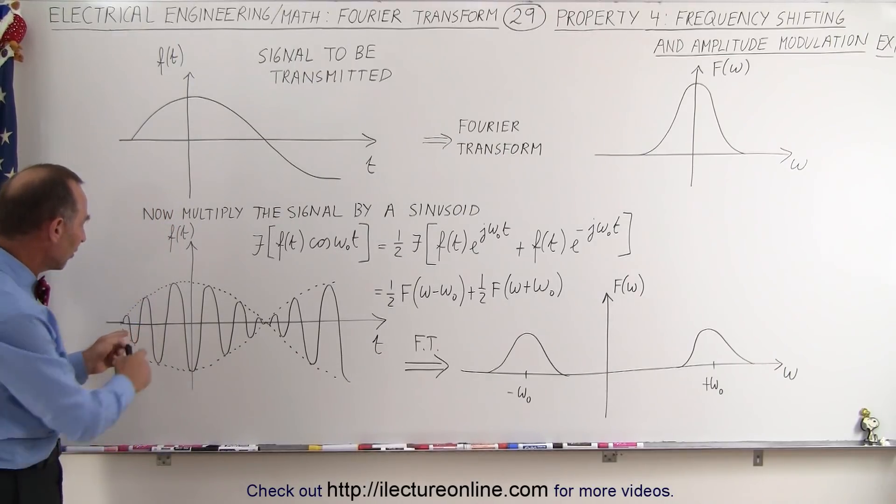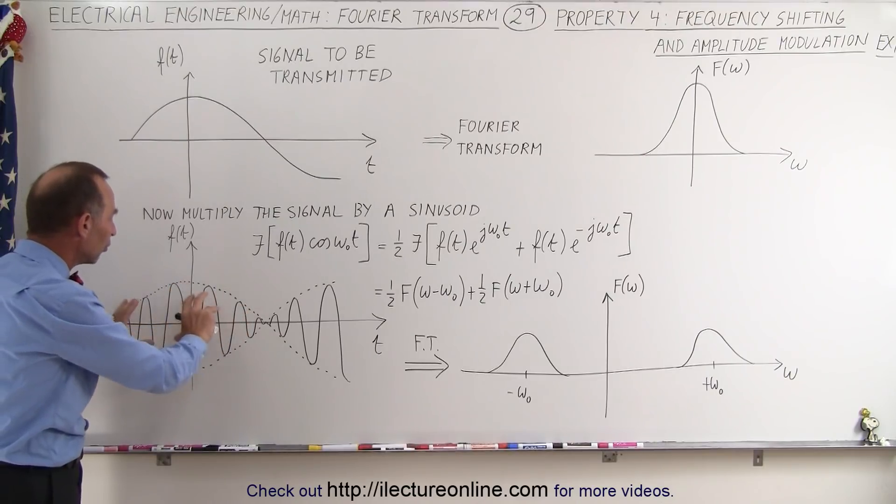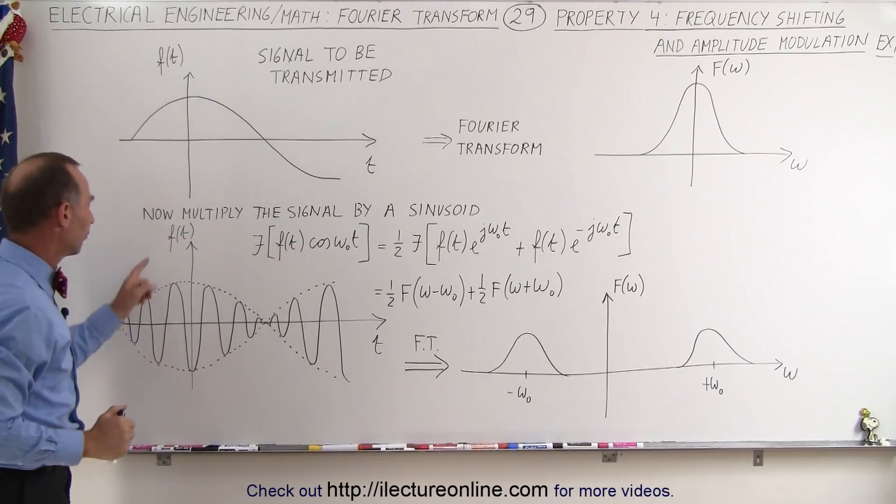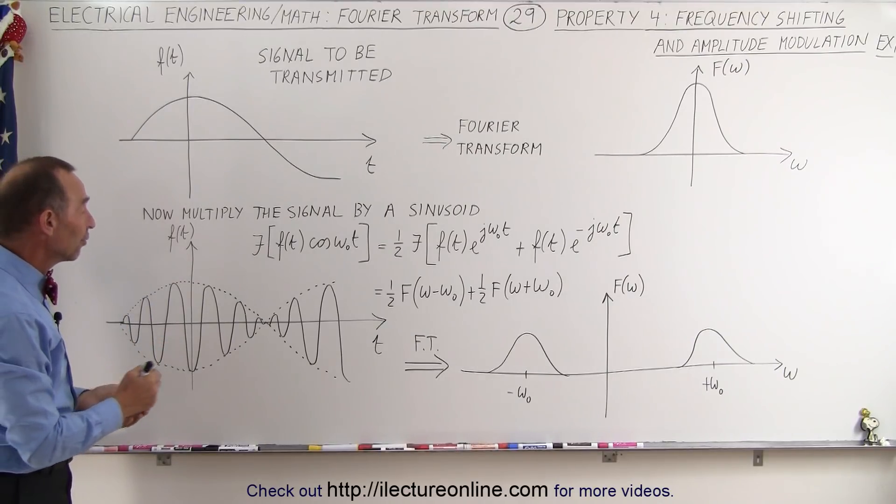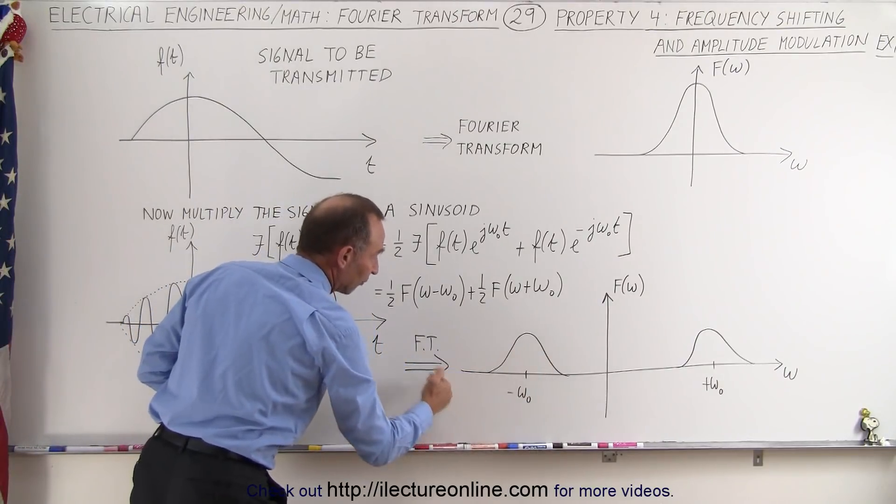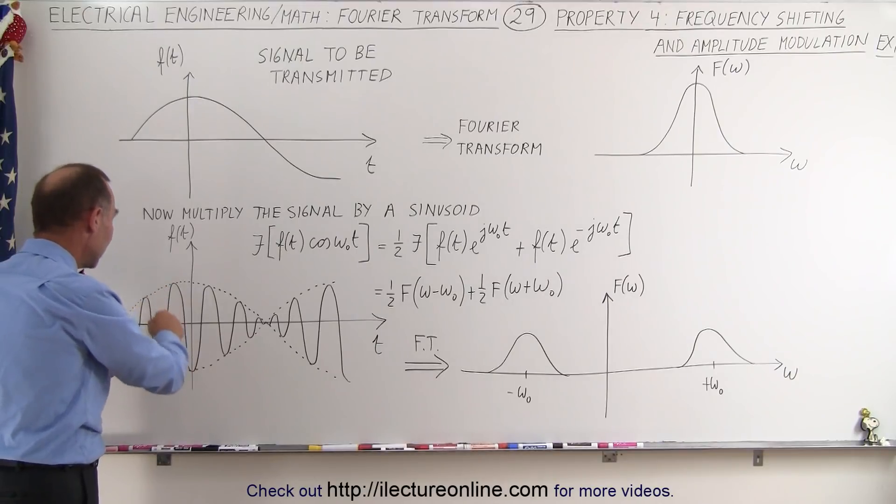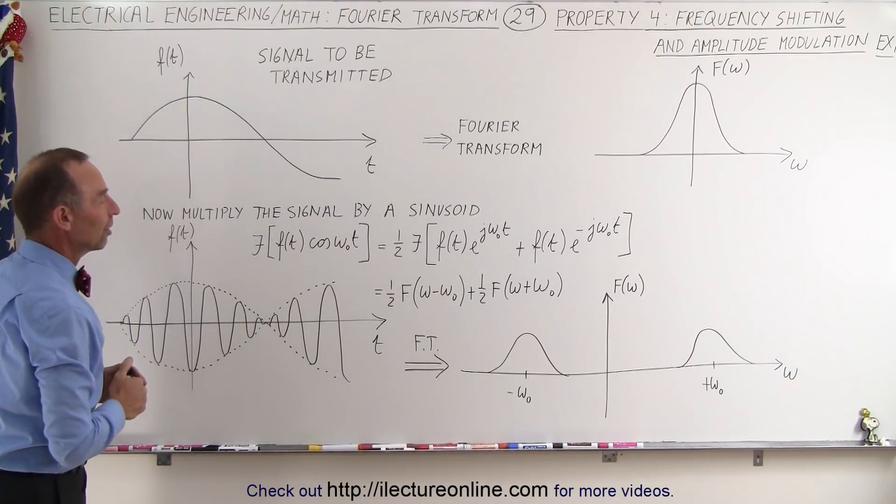And so the amount of the shift is determined by the frequency of the signal superimposed or multiplied by the initial function in the time domain that we're trying to transmit. If you want to shift it more, you have a higher frequency, higher frequency shifted further left and further right. If you want to shift it less, then you have a smaller frequency here and that will then give you less of a shift.